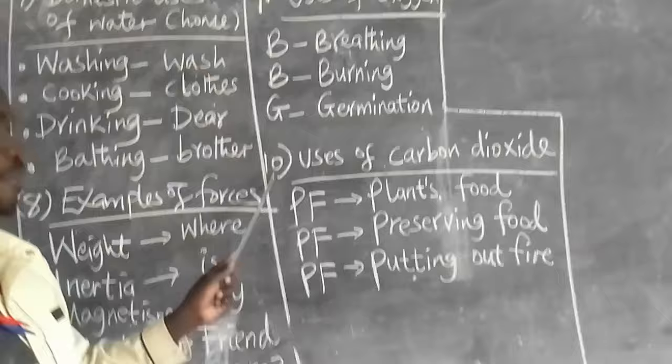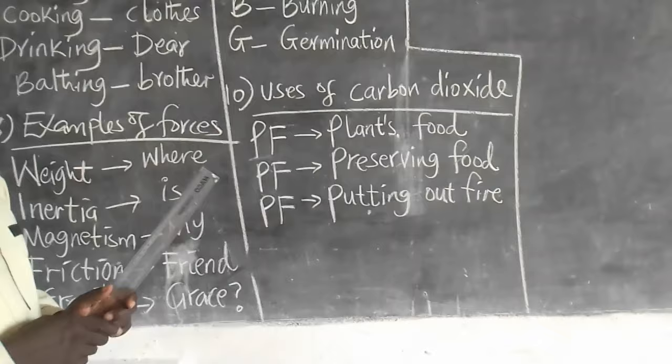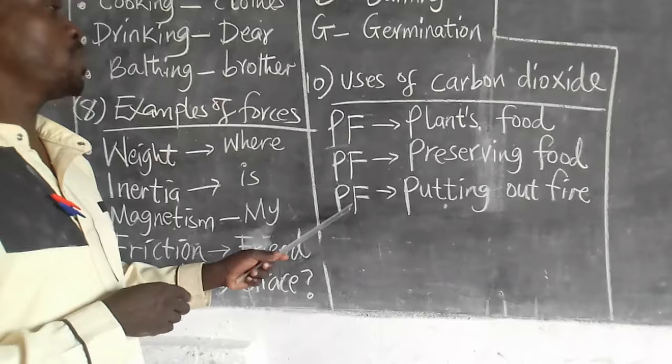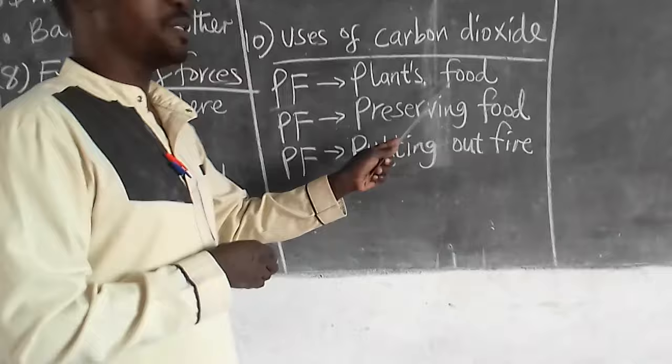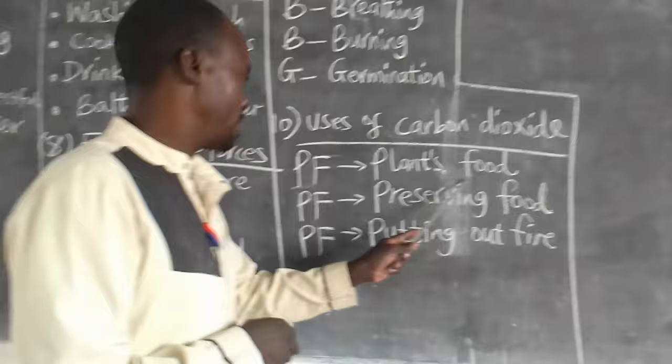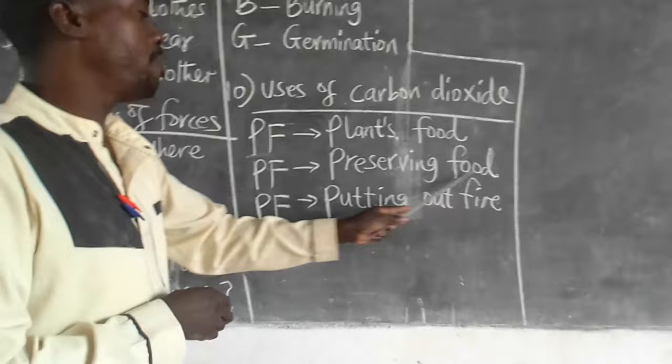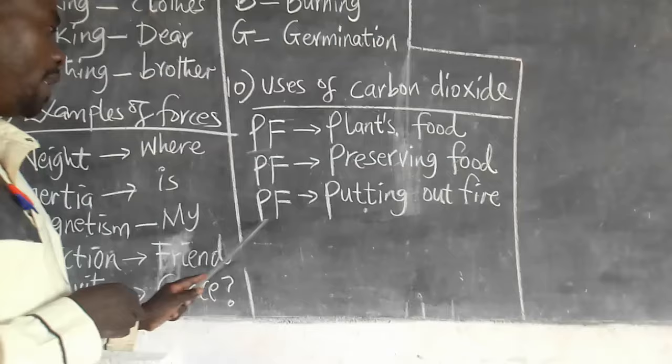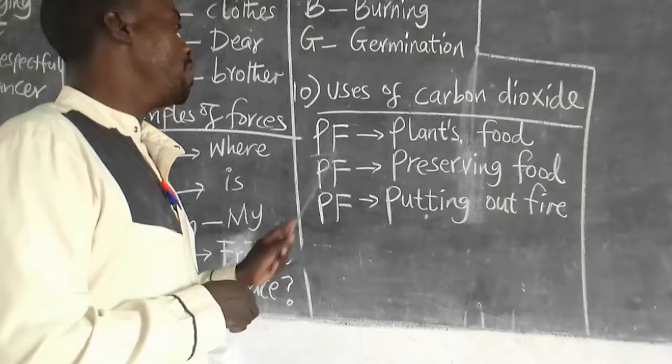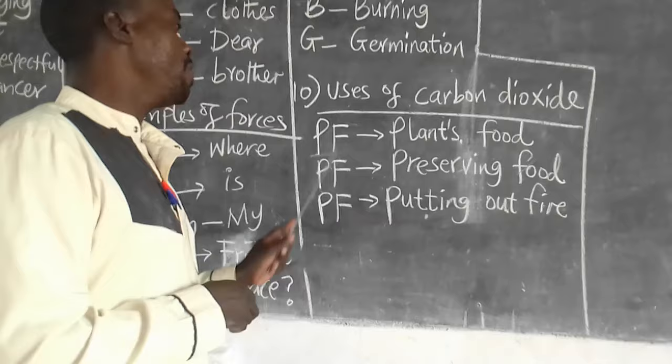Uses of carbon dioxide. Mnemonic: PF. PF stands for: plants food - carbon dioxide is used in making plants' food during photosynthesis; PF: preserving food and drinks; PF: putting out fire. Plants food, preserving food, putting out fire. Thank you.